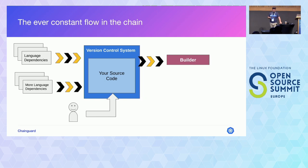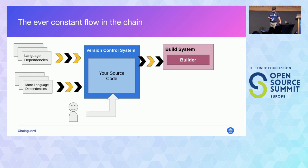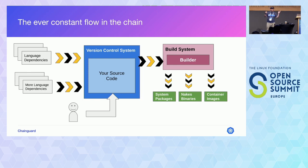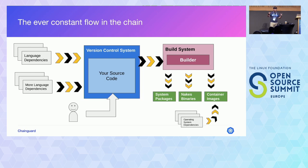Your builder runs inside a build system like GitHub Actions or GitLab — unless you're releasing from your laptop, which you probably shouldn't do. The builder outputs artifacts: binaries, system packages like RPMs or debs, or container images. Container images pull another set of dependencies — the operating system dependencies that make the container run. And adding to the complexity, there's a human element: people work as part of a team, not alone.